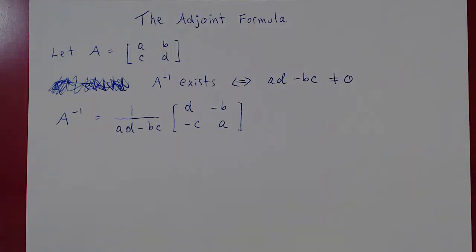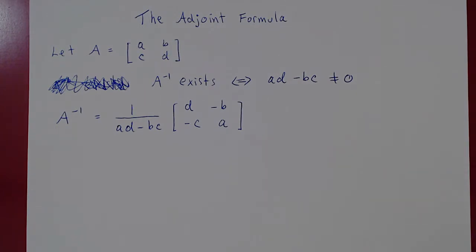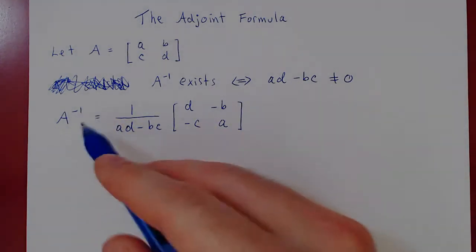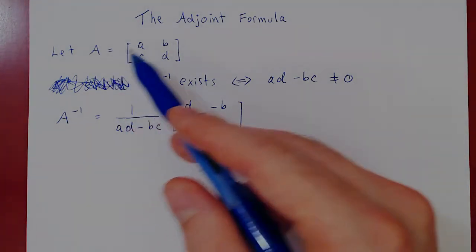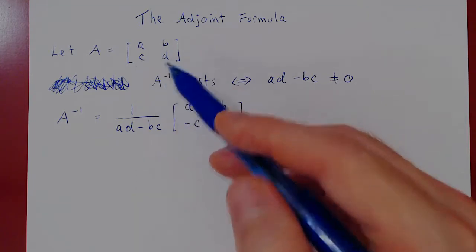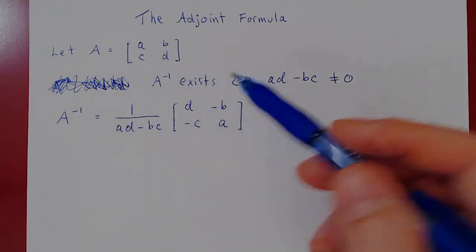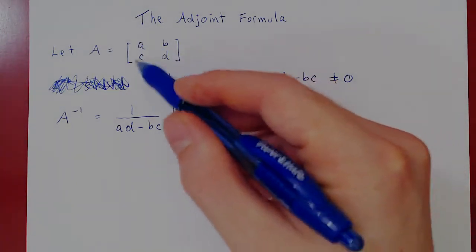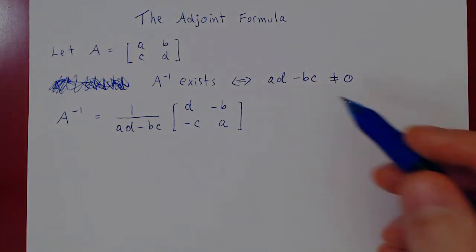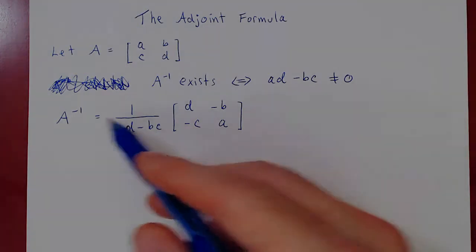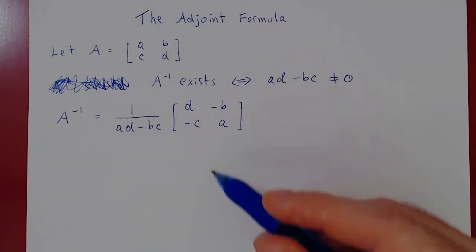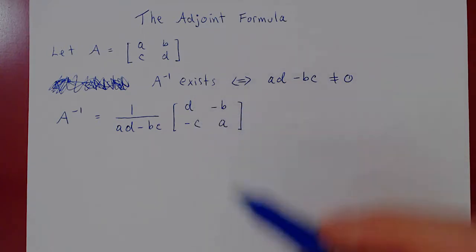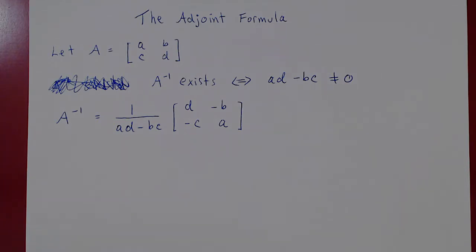In this video, with the help of the determinant of a square matrix, we'll try to extend the shortcut formula for the inverse of a 2 by 2 matrix. Remember the following result: if A is a 2 by 2 matrix where the entries are A, B, C, D, we know A inverse exists — hence A is invertible — if and only if AD minus BC is not equal to 0. The question is, does there exist a similar formula for the inverse of a 3 by 3 invertible matrix, or 4 by 4, and so on.